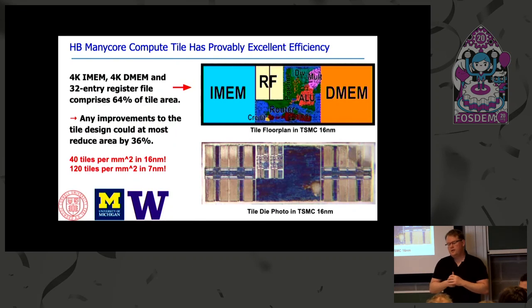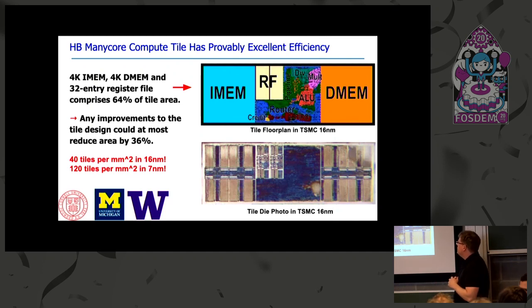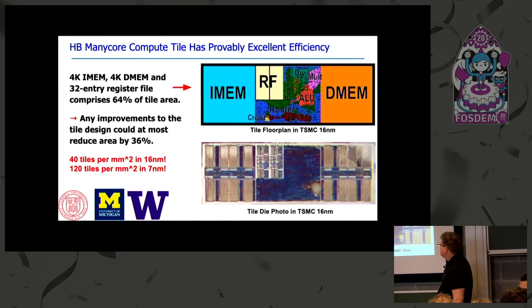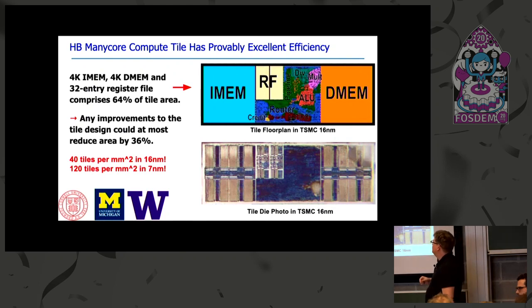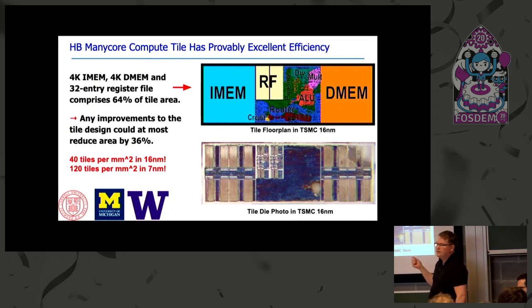We have very good efficiency for the ManyCore. This is a picture of a floorplan in TSMC 16 nanometer, and this is a die photo from the actual chip, presented at the fourth RISC-V Summit in 2017. Even with super small instruction memory and data memory, the memories themselves occupy 64% of the tile area. The core is so small that you can fit 40 of these per millimeter squared in 16 nanometer, and in 7 nanometer you'd fit 120 per millimeter squared.